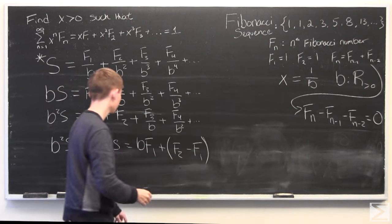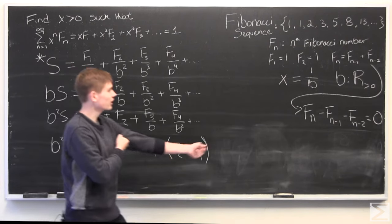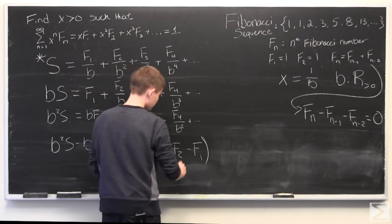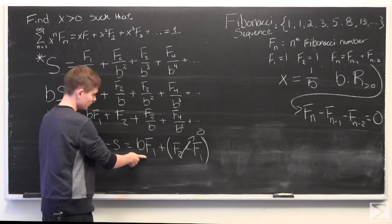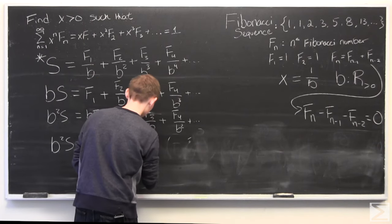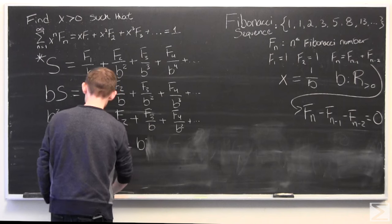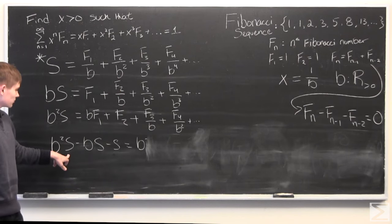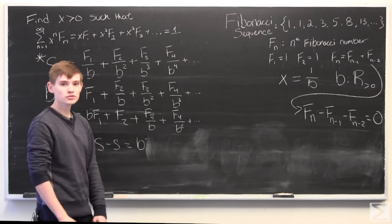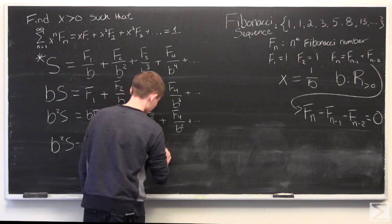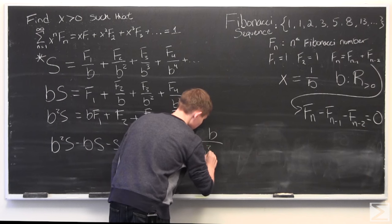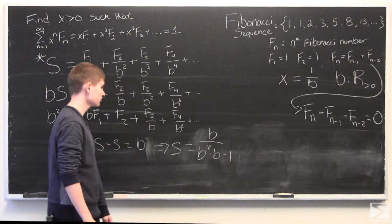And so, we're left with this. And looking back, we have f1 and f2 are equal to 1. 1 minus 1 is 0. So, this goes away. And f1 is equal to 1. So, we're just left with b squared times the original sequence minus b times the sequence minus the sequence is just equal to b. And we can rearrange this so that s is equal to b over b squared minus b minus 1.